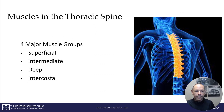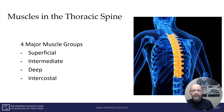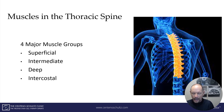The thoracic spine is broken into four major groups of muscles. If you peel them away like an onion, there are different layers. The one closest to the skin is called the superficial, then the next layer is the intermediate, then there's the deep layer adjacent to the bones, and then there's this odd group called the intercostals.